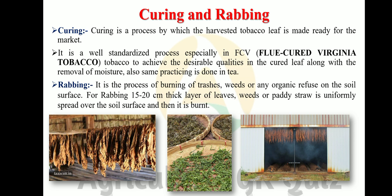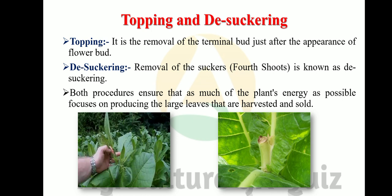Raabbing is a process of burning of traces, weeds, or any organic refuse on the soil surface. For raabbing, a 15 to 20 centimeter thick layer of leaves, weeds, or bedding straw is uniformly spread over the surface and then burned. In the photographs, we see cured tobacco leaves, tea processing, and the raabbing process done by burning leaves or weeds.